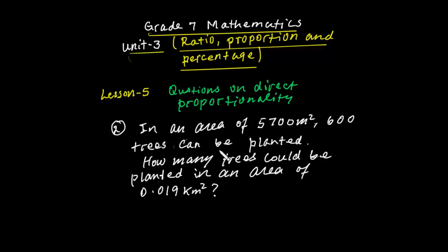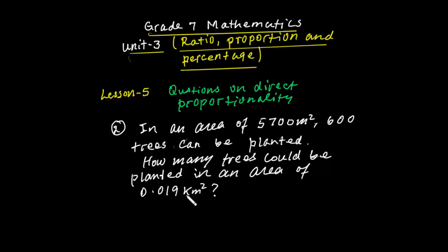The question says: in an area of 5,700 square meters, 600 trees can be planted. How many trees could be planted in an area of 0.019 square kilometers? Let's see the solution for this question.